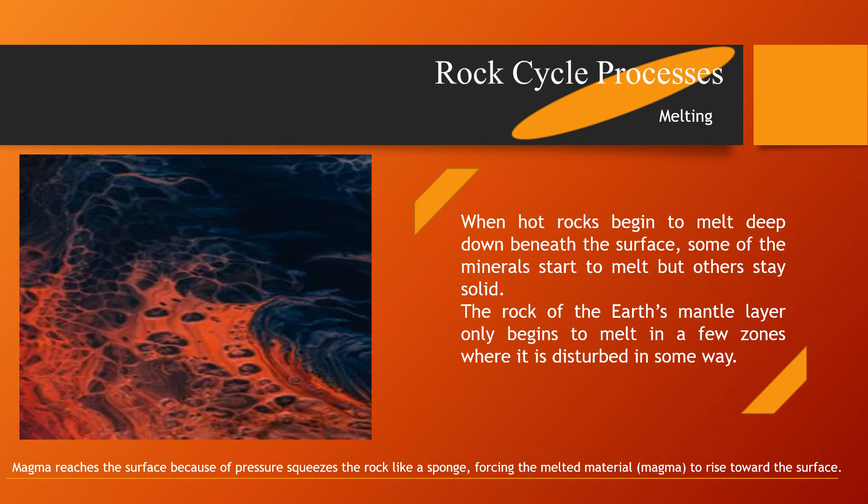Melting. Rocks are made up of different minerals that have different melting points. When hot rocks begin to melt deep down beneath the surface, some of the minerals start to melt but others stay solid. The rock of the Earth's mantle layer only begins to melt in a few zones where it is disturbed in some way. Rocks melt because of the heat beneath the Earth's surface as well as other factors such as changes in pressure or the presence of water within the rock. Magma reaches the surface because of pressure that squeezes the rock like a sponge, forcing the melted material to rise towards the surface.